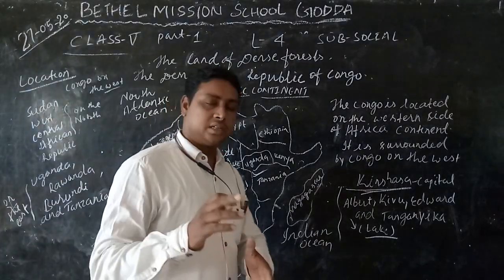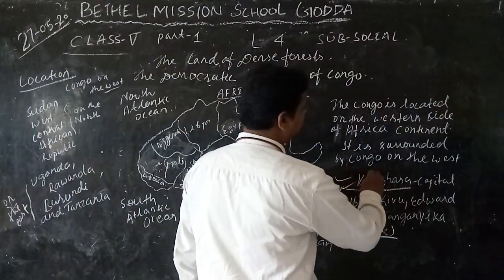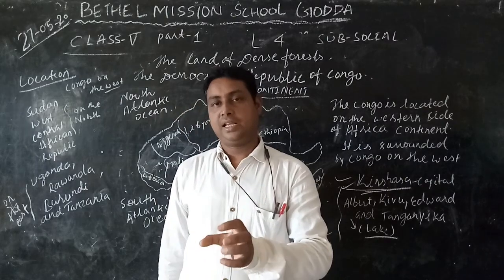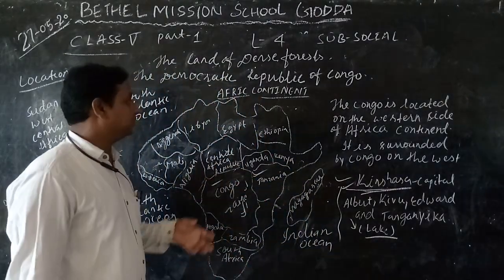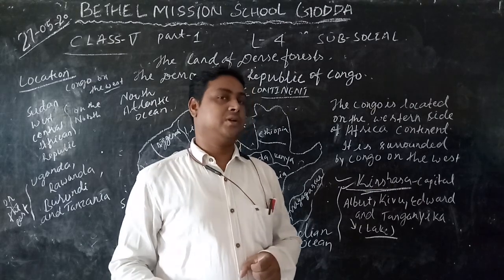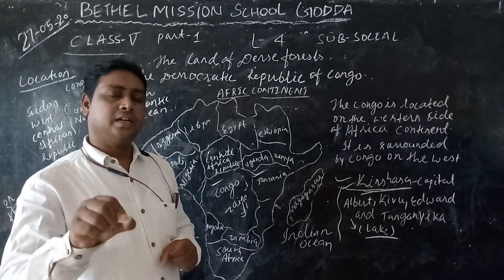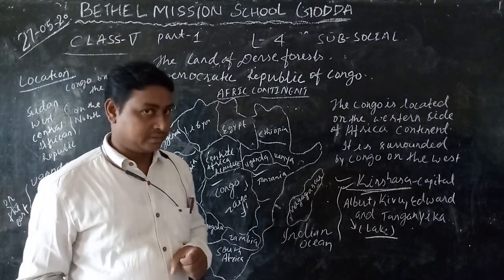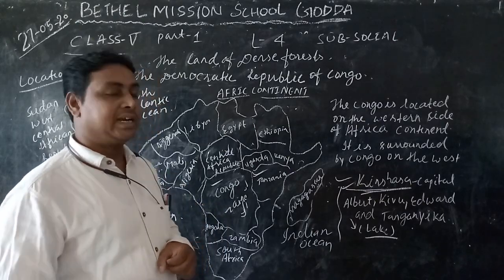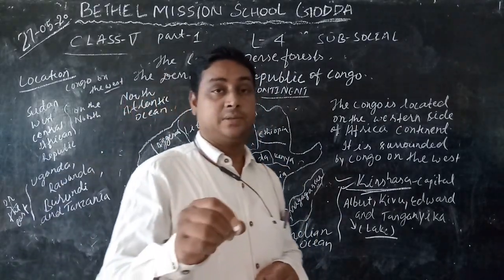Kinshasa is the capital of Congo. The most important and biggest river of the Democratic Republic of Congo is the Zaire River. This river is the second largest river of the African continent and is also known as the Congo River, because the country is Congo. It is also known as the central river of the African continent.